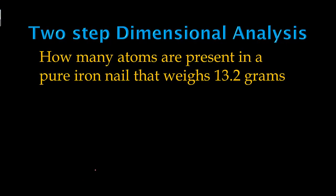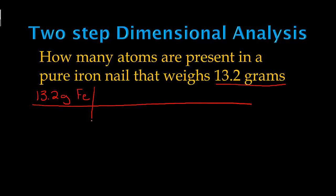Our first problem is: how many atoms are present in a pure iron nail that weighs 13.2 grams? The first thing you do is take the number given and put it in the upper left-hand corner of your dimensional analysis grid — 13.2 grams of pure iron, Fe. We eventually want to get to atoms, but we cannot go directly from grams to atoms. We must first go from grams to moles of iron, and then from moles of iron to atoms of iron.